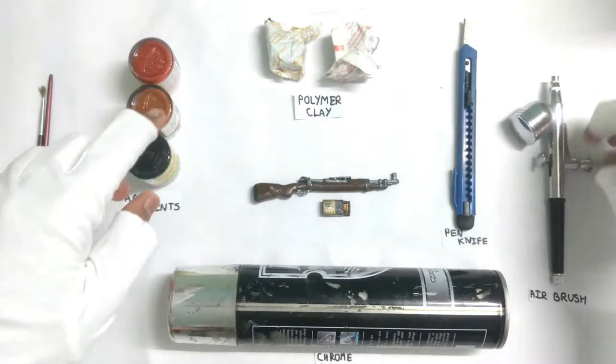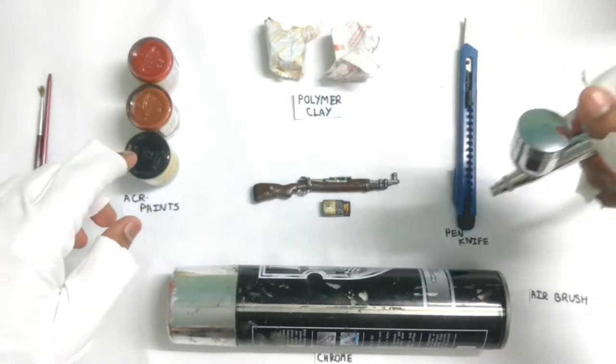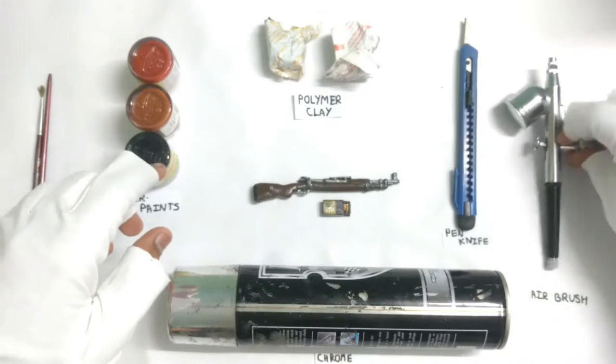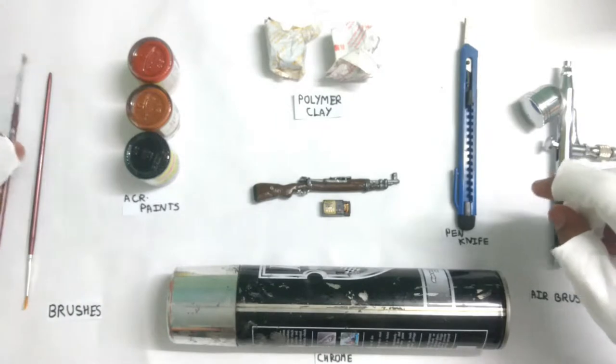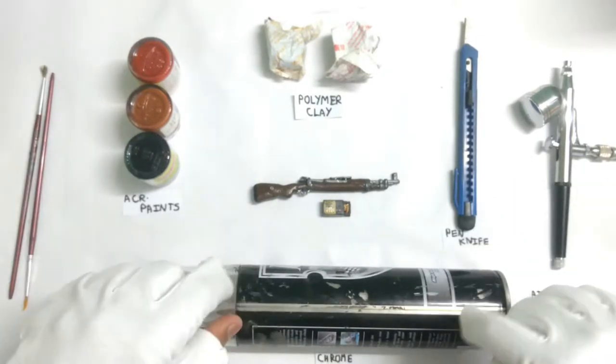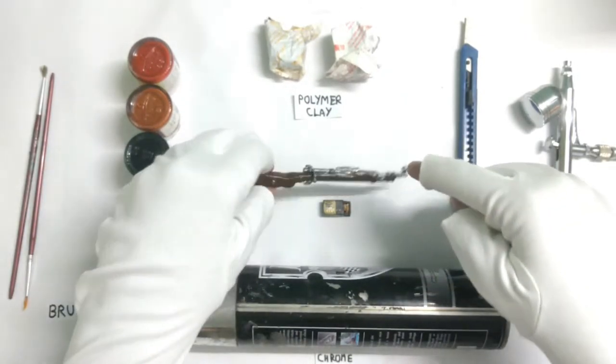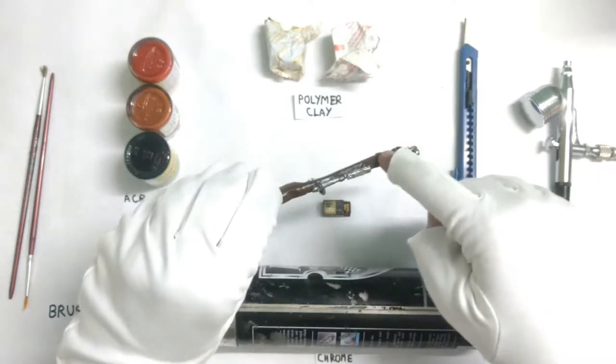And then we have the pen knife and we need an airbrush. I just bought it, it's an awesome one. I used it to paint the barrel and everything. These acrylic paints to get the brown color and then you need chrome colored spray paint for the barrel and everything.